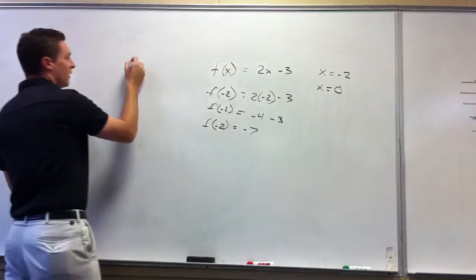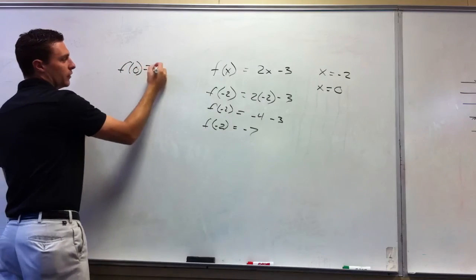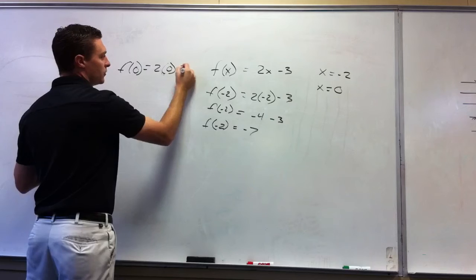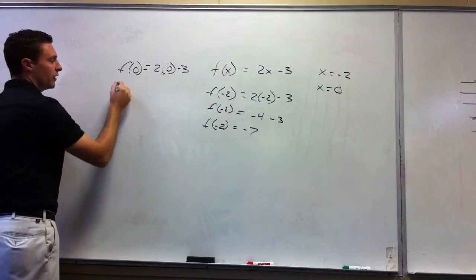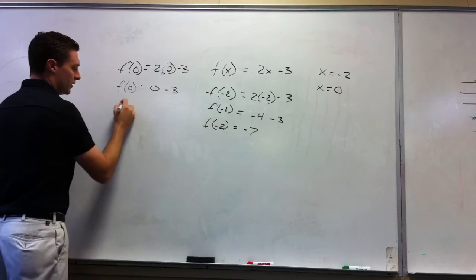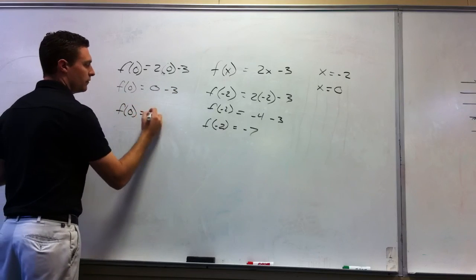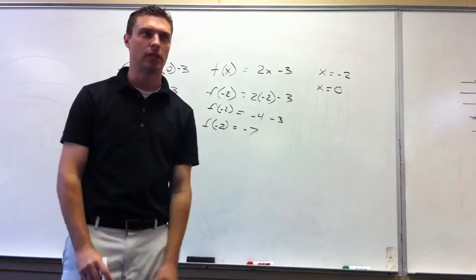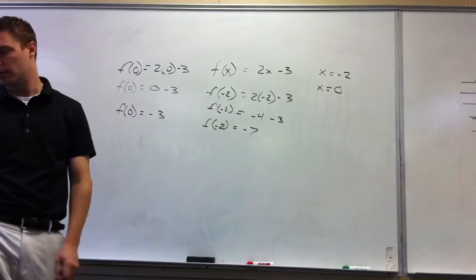So we would say f of 0 equals 2 times 0 minus 3. 2 times 0 is zero. Zero minus 3 is negative 3. Right. So we would say f of 0 is negative 3, f of negative 2 is negative 7. Okay? So nothing too complicated there.